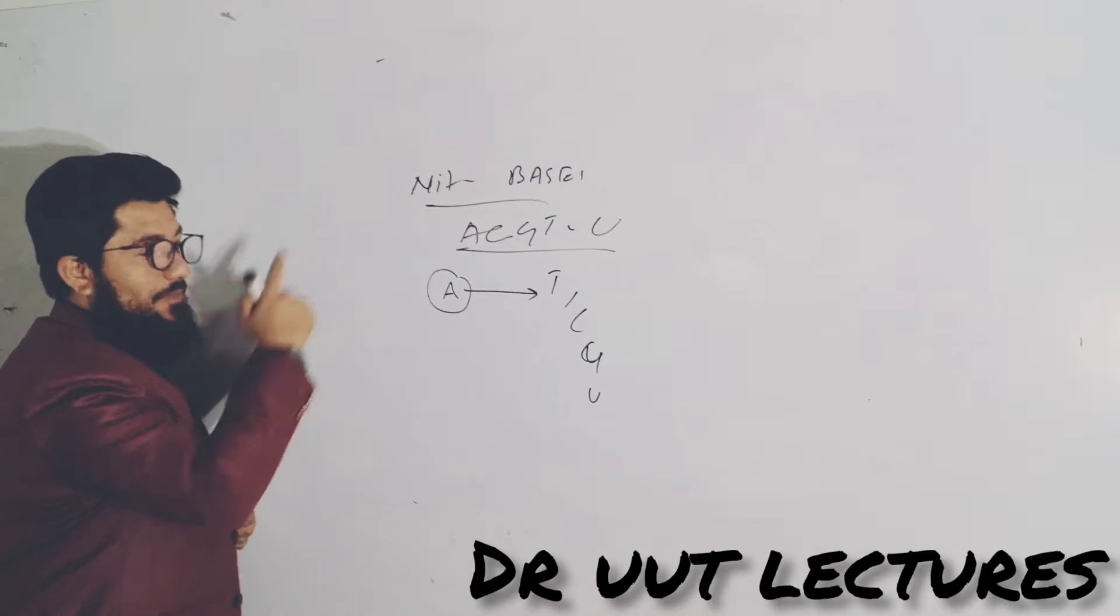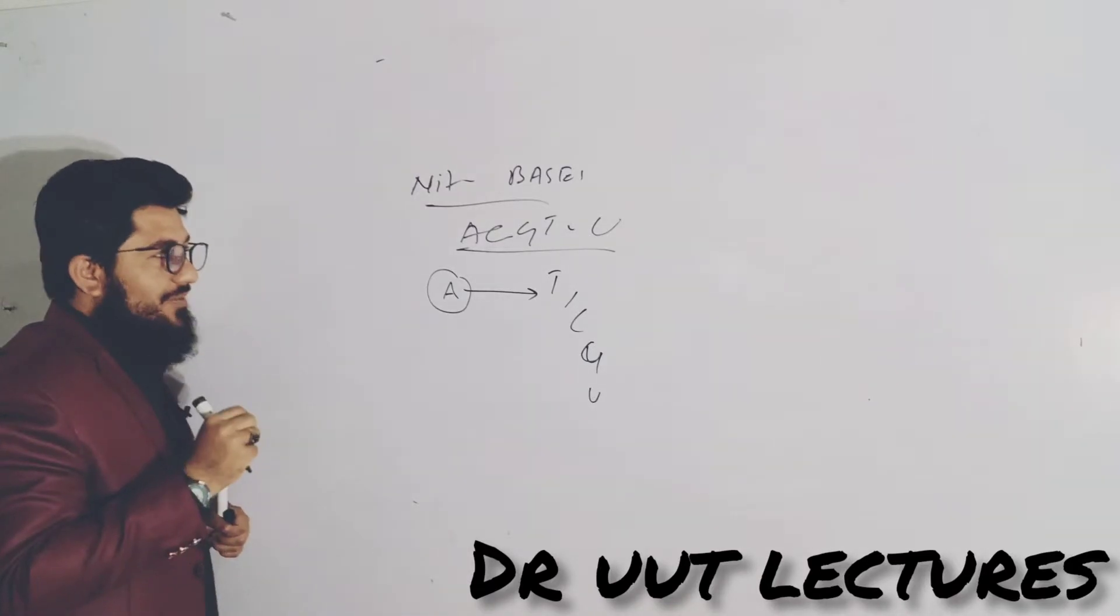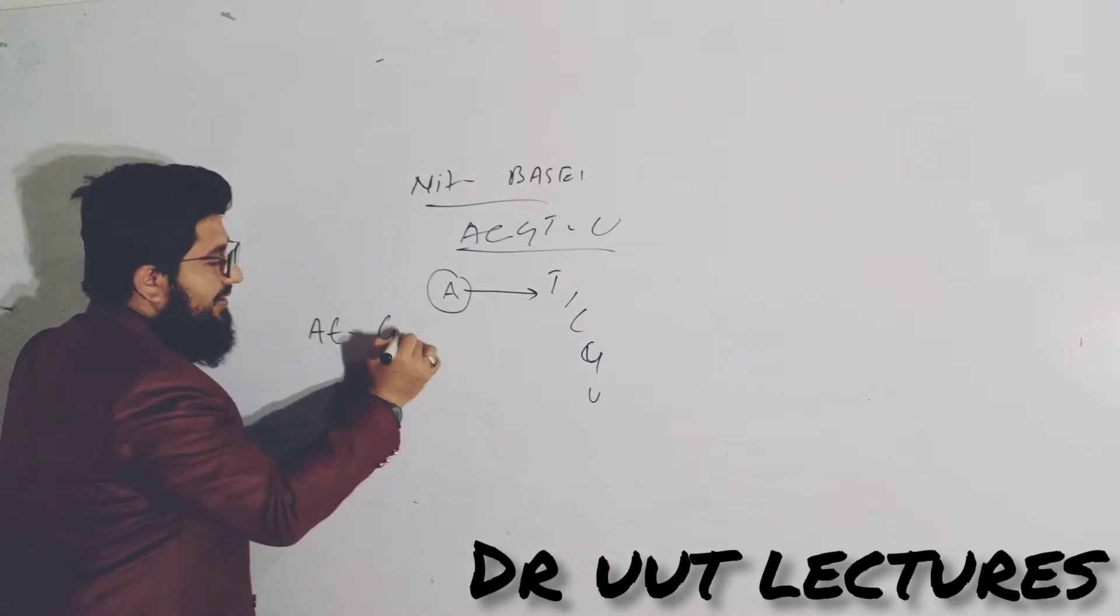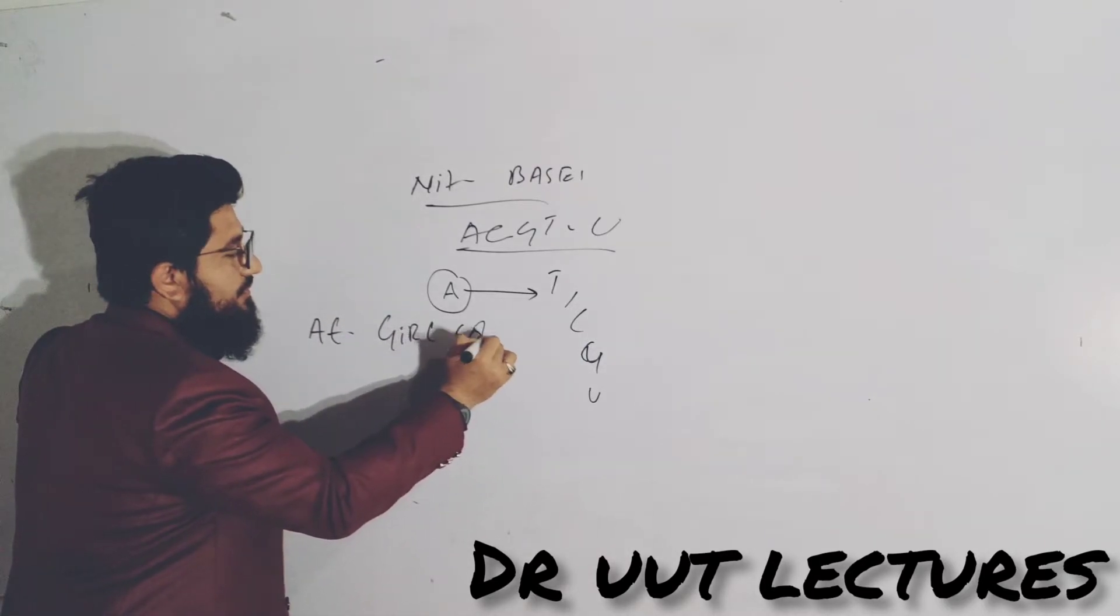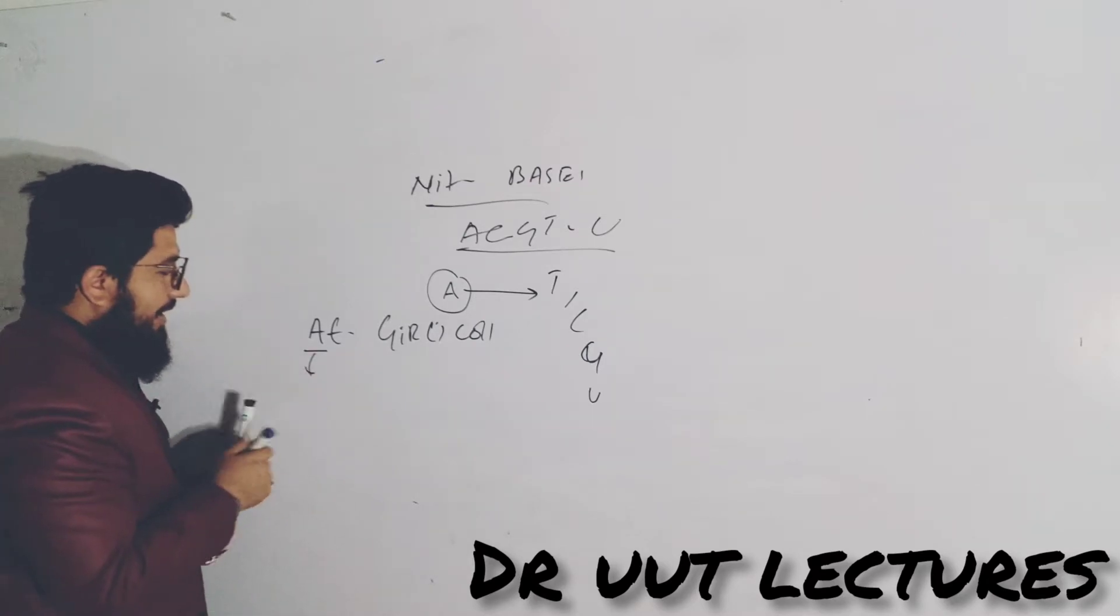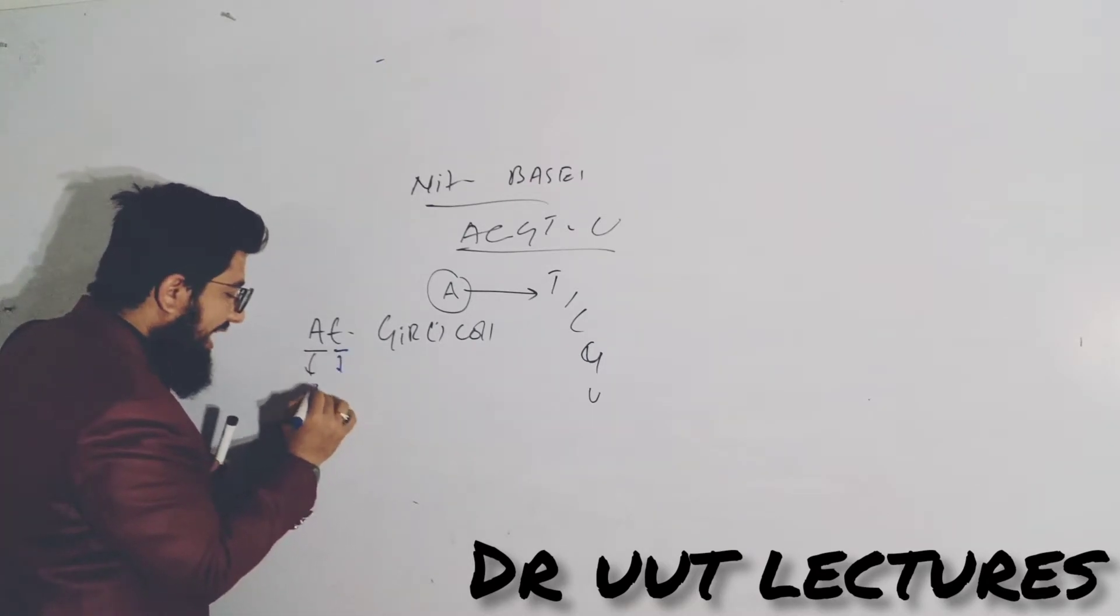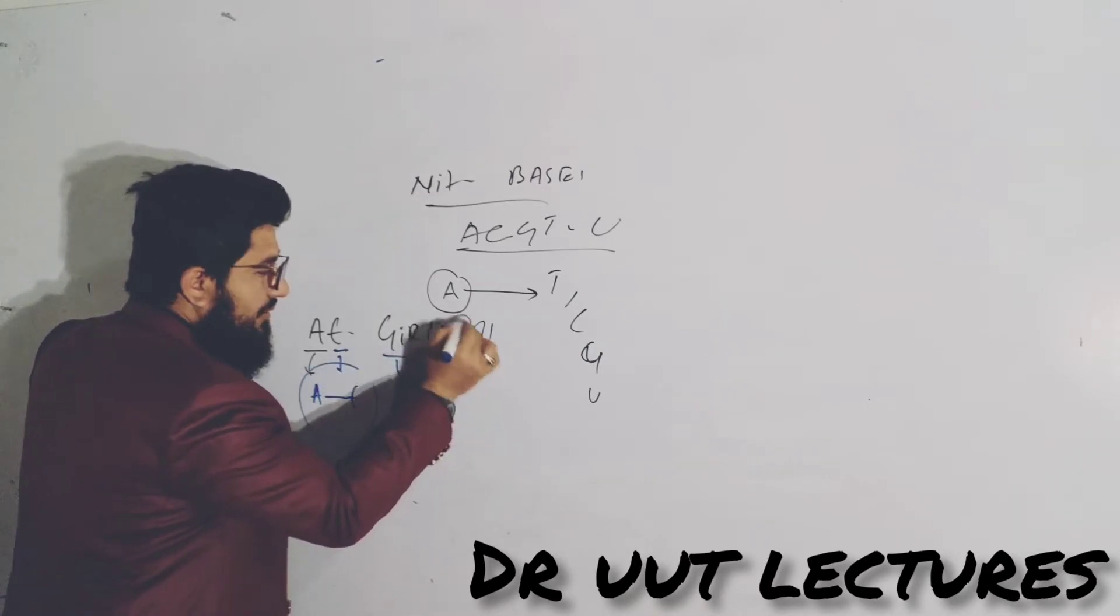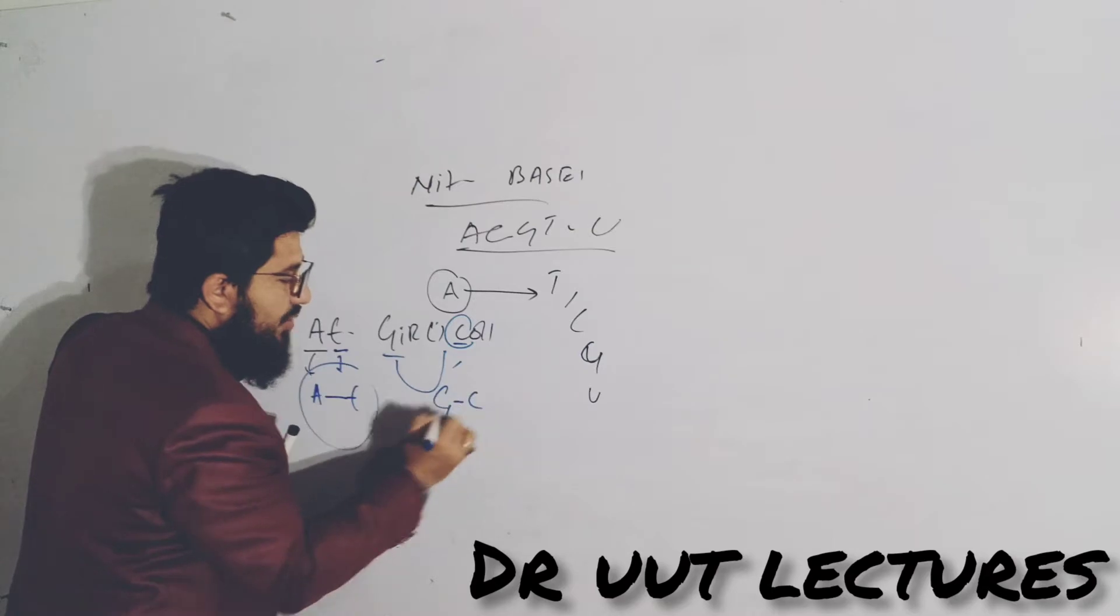Sorry for that, it is actually a kind of trick to tell you guys about this particular base pairing. What is that trick? Simple, a sentence: At Girls College. Now we have A here and T here, so A will always bond with T. Girls College: G will always bond with C.